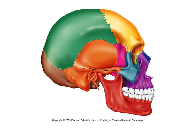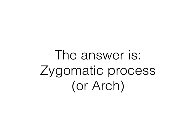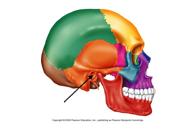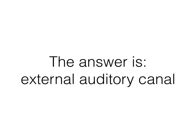What's the name of that structure there on the side? The black line? That's a zygomatic process or arch. What's the name of that opening in the temporal bone there? That's the external auditory canal. Some people say acoustic, or instead of canal they'll say meatus. Those are all correct.